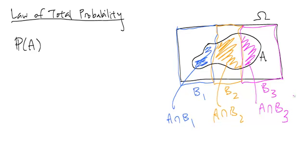And so then the probability of A would just be equal to the sum of these three pieces. And in general,